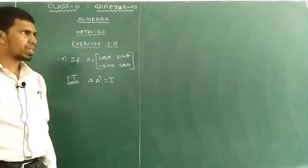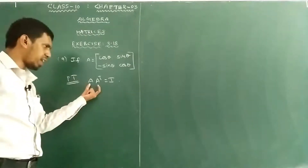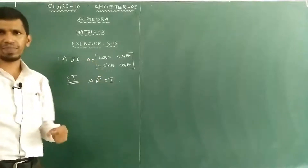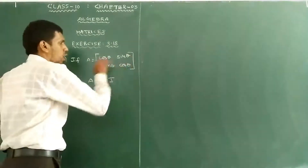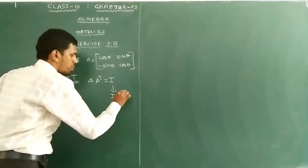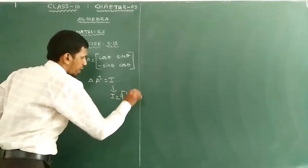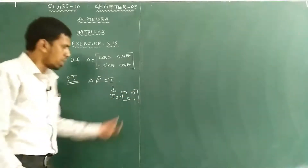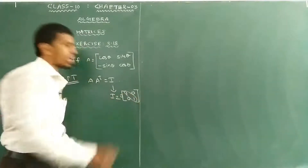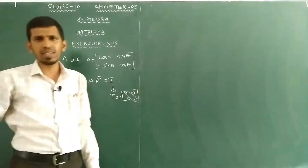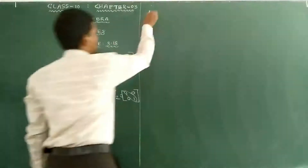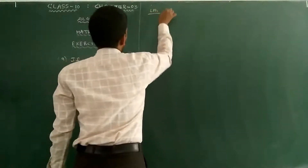The left hand side is equal to the right hand side, which is called the identity matrix. The 2×2 identity matrix I₂ equals [1, 0; 0, 1]. The leading diagonal elements form the identity matrix, and left hand side equals A into A transpose.